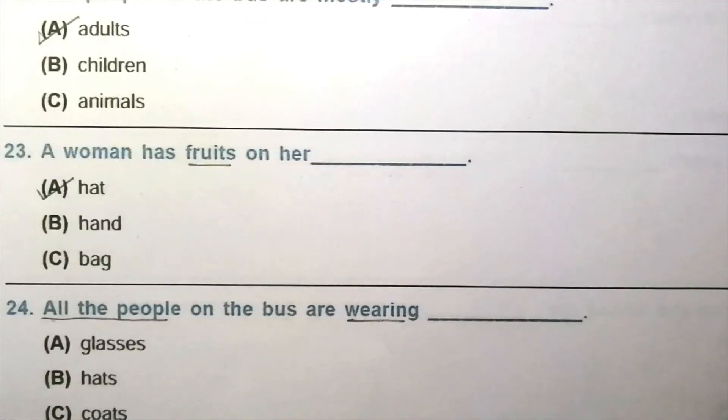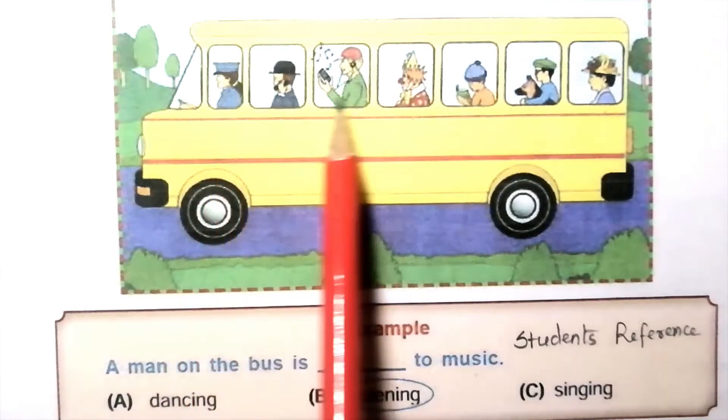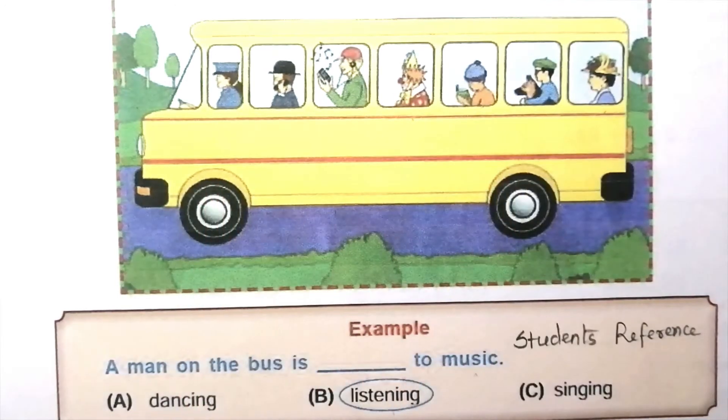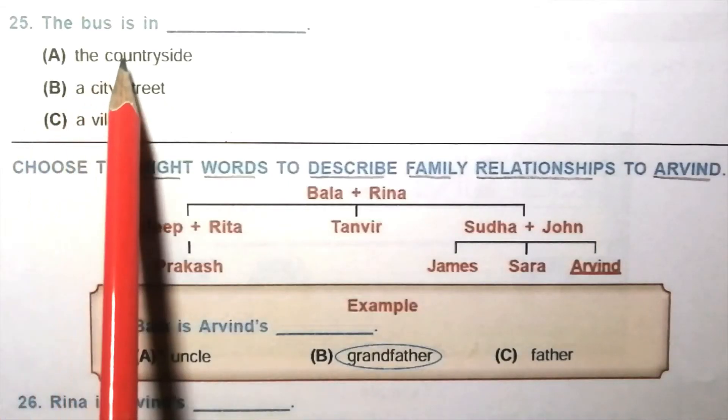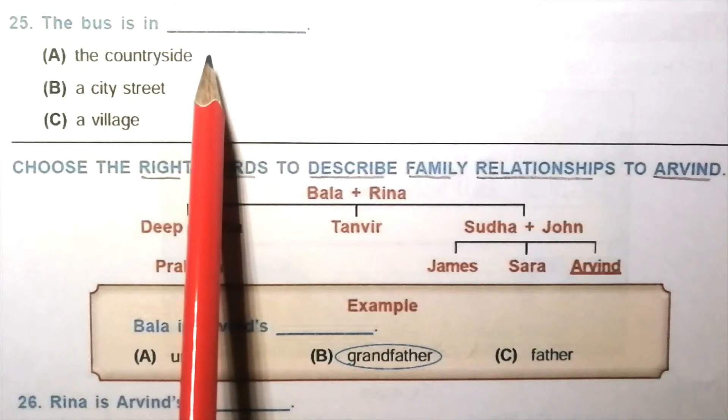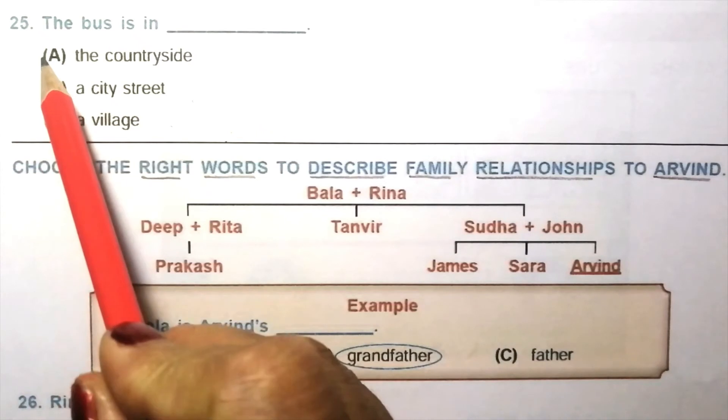Question 24: All the people on the bus are wearing blank. Glasses, hats, coats. Look at the given picture. All the people wearing hats. So the answer is B, hats. Question 25: The bus is in blank. The countryside, a city street, a village. The answer is A, the countryside.